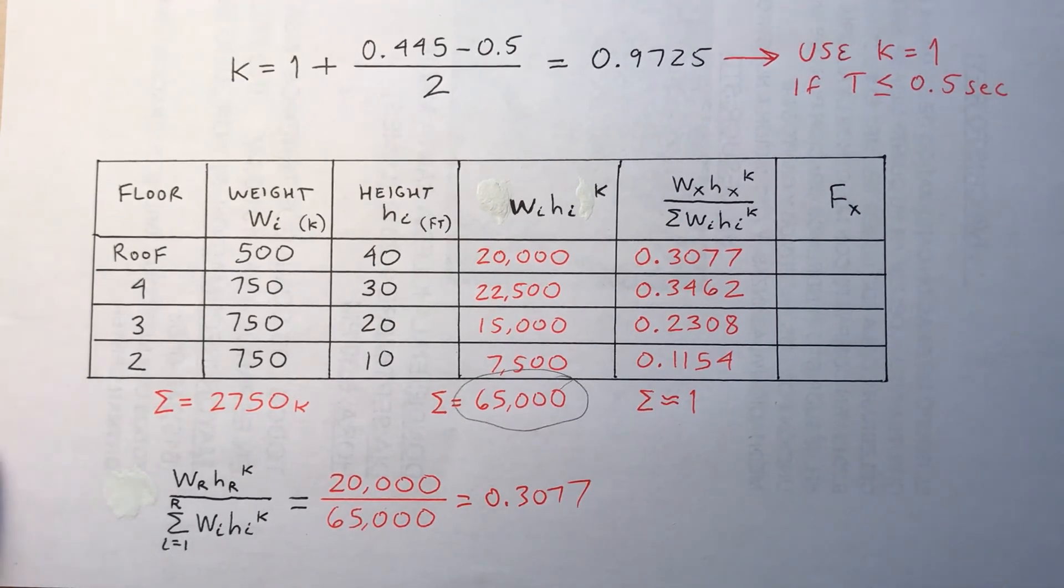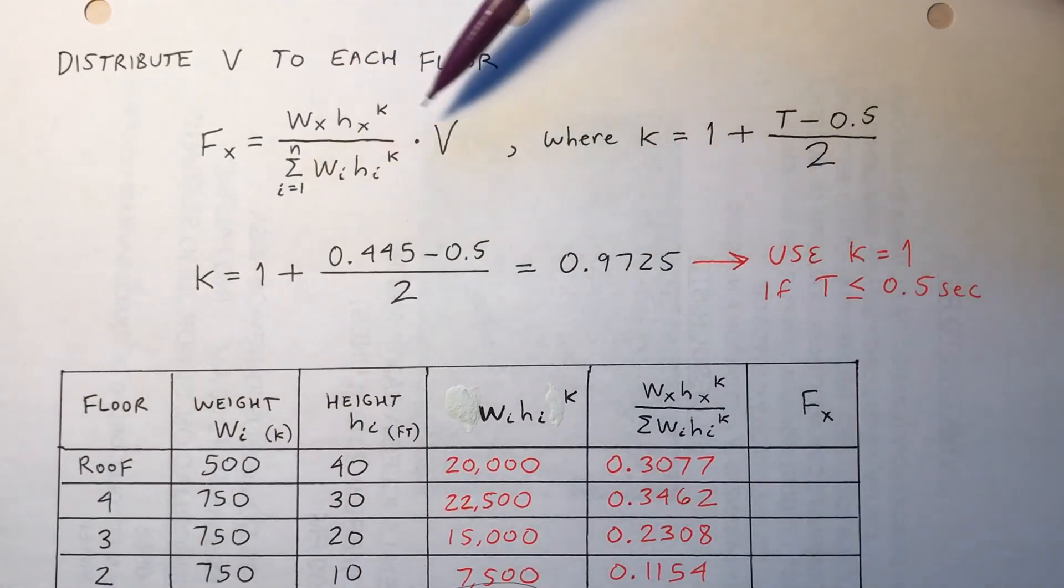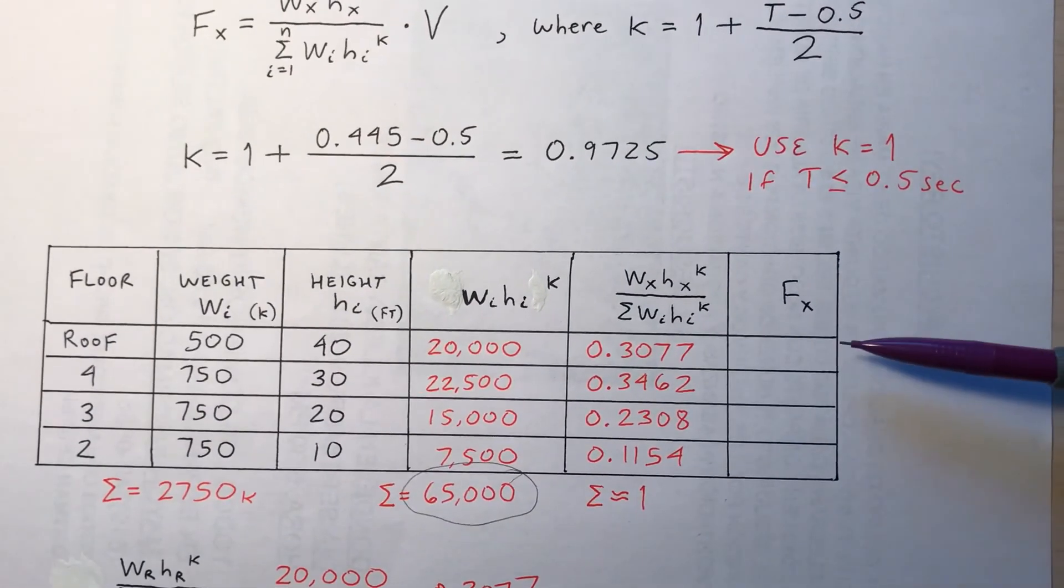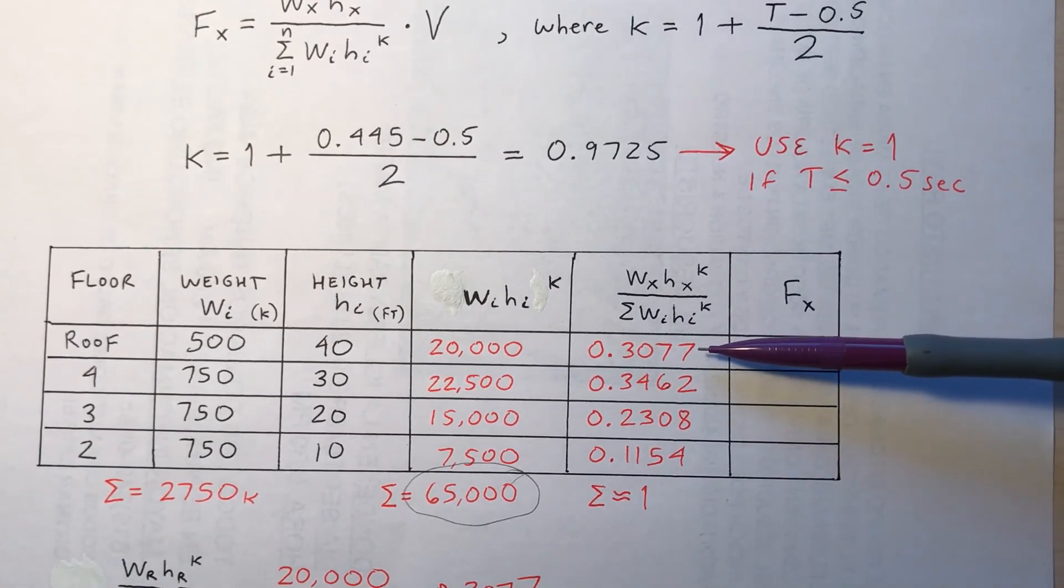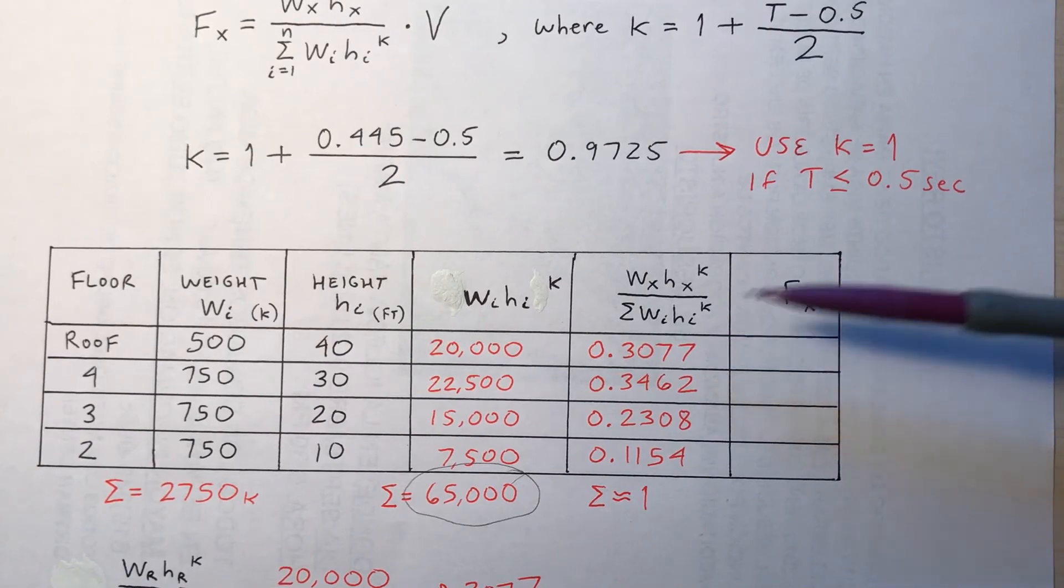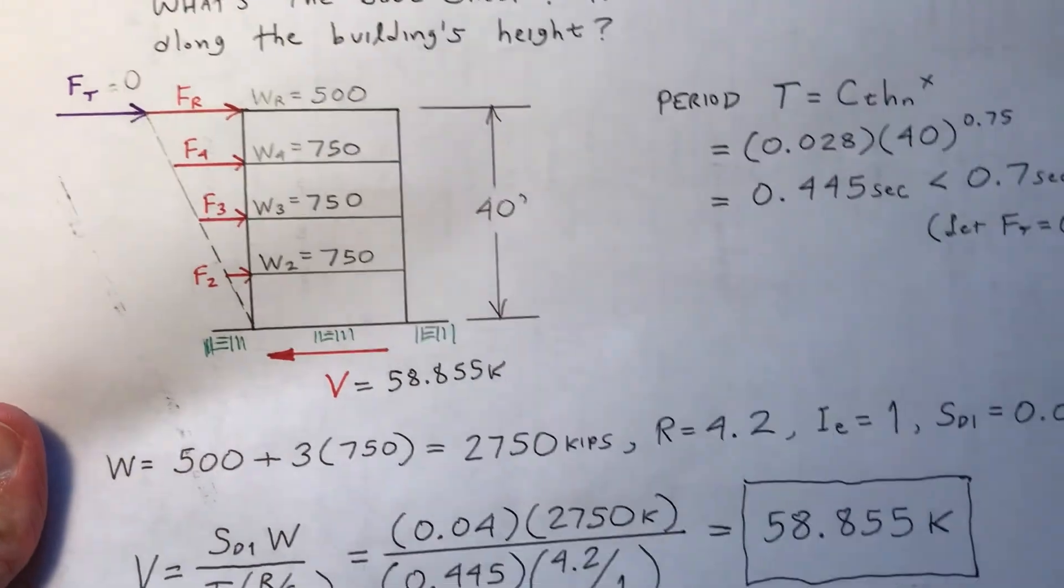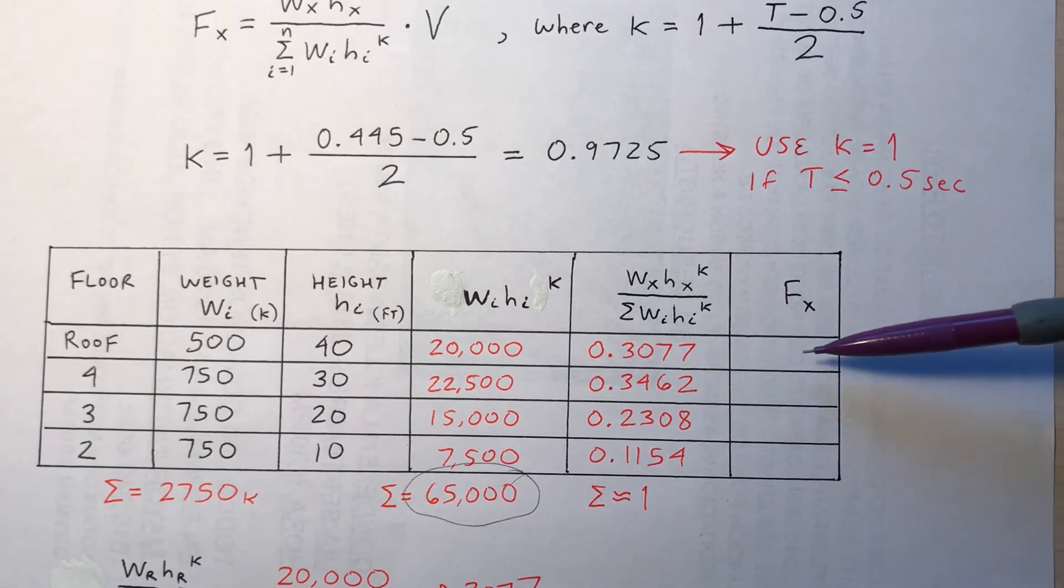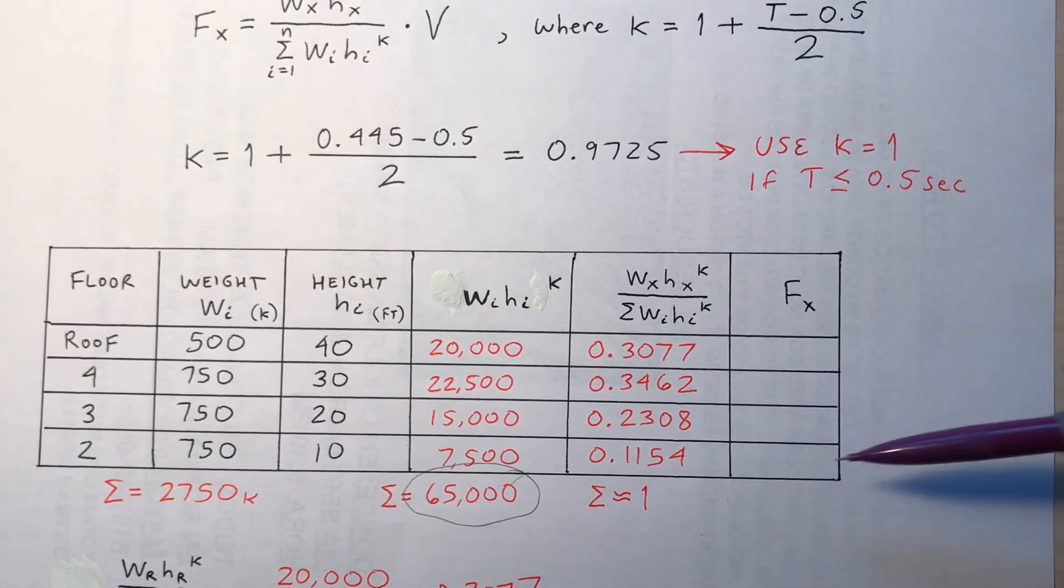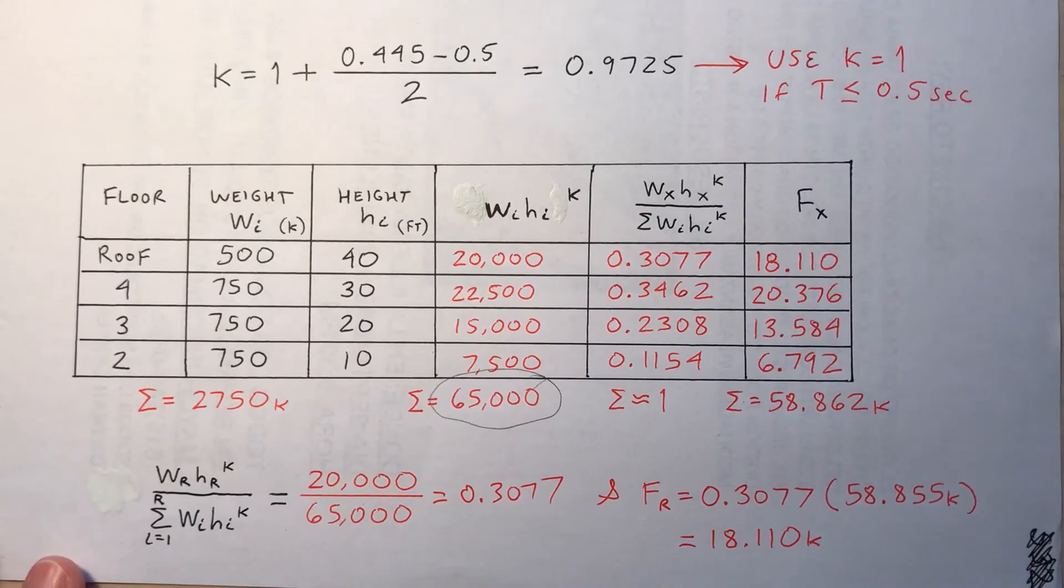The last column, F_X. So what does F_X represent? Well, that's the amount of base shear that is carried by each floor. So remember the formula for that? So how do I get this number? The number right here? How do I get that? Well, I'd multiply this number, the 0.3077, by the base shear. So remember this previous slide? I calculated the base shear already. So if I multiply this number by the base shear, I should get this number. And similarly with the other three cells here. So I'm going to fill those in.